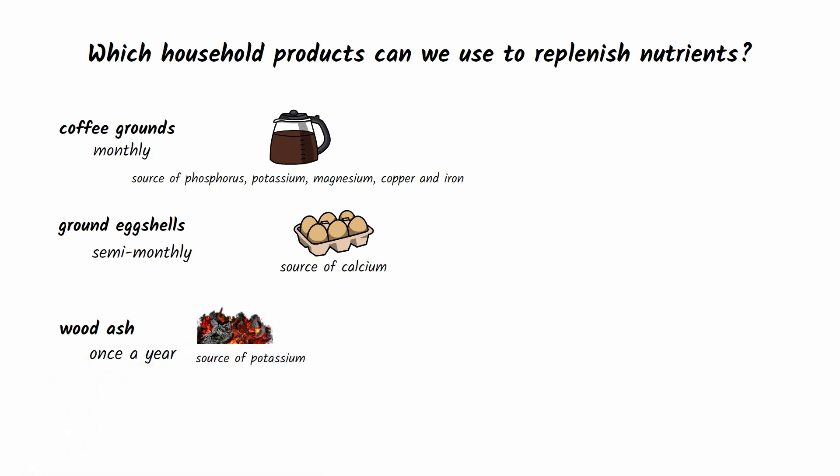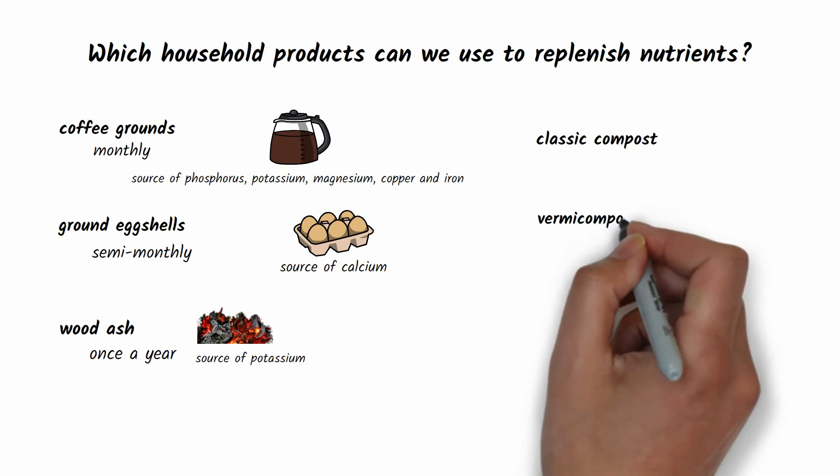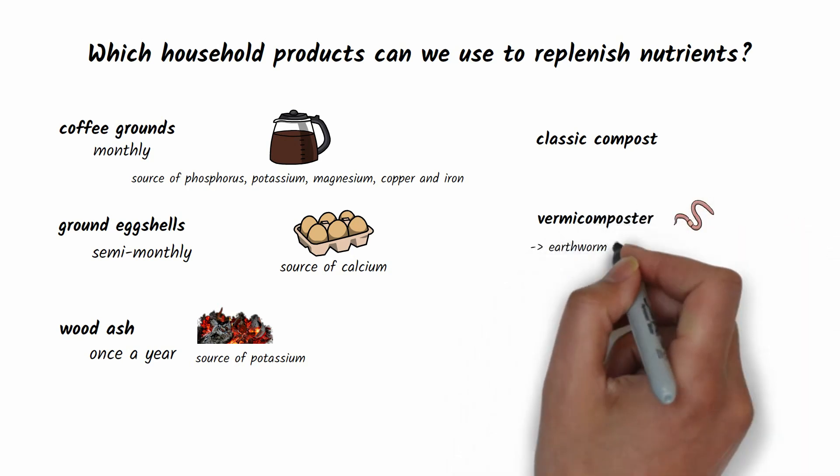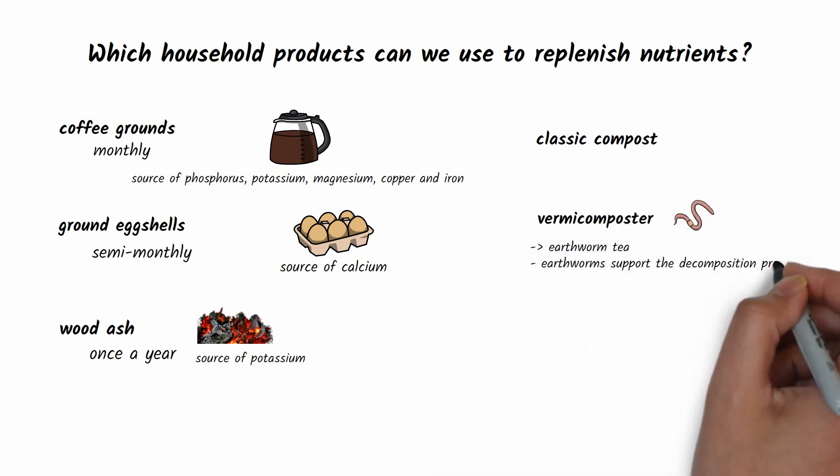Wood ash is a source of potassium. You only need to add it once a year and you can collect it either from the fireplace or after a barbecue. At home we can also produce our own complex source of nutrients for our plants.